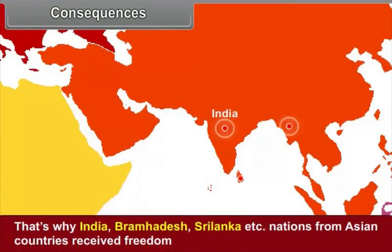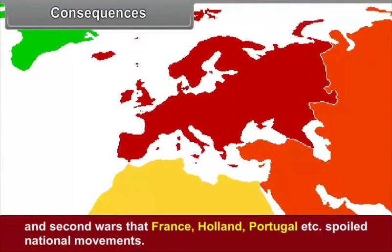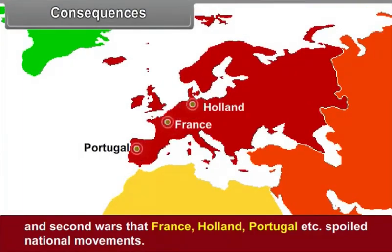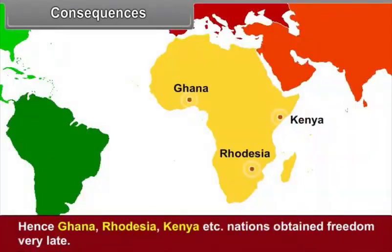That is why India, Burma, Sri Lanka and other Asian nations received freedom. On the other hand, France, Holland, Portugal and others suppressed national movements. Hence, Ghana, Rhodesia, Kenya and other nations obtained freedom very late.